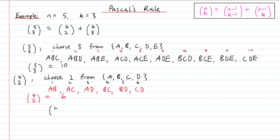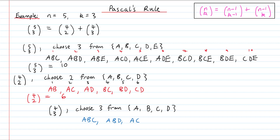Finally, we'll look at the 4 choose 3 term. We can think of this as choosing 3 from the set A, B, C, D. Listing all the ways we can do this, we get: ABC, ABD, ACD, and BCD. So we've got 4 ways, meaning 4 choose 3 equals 4.